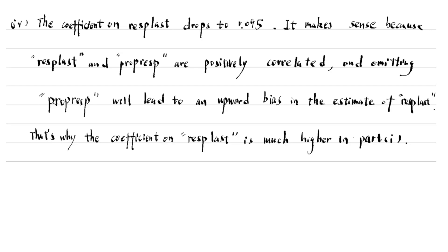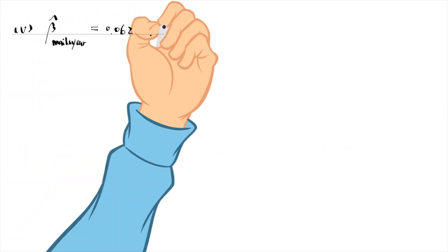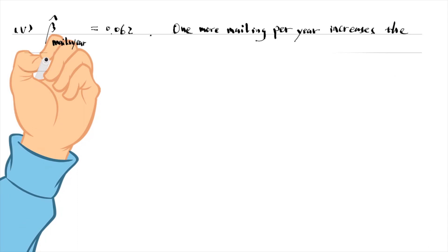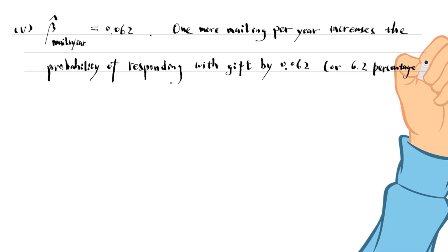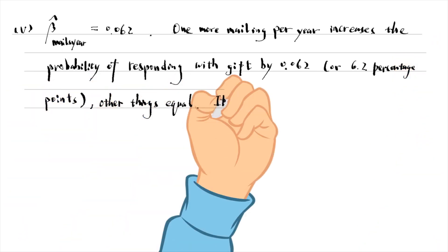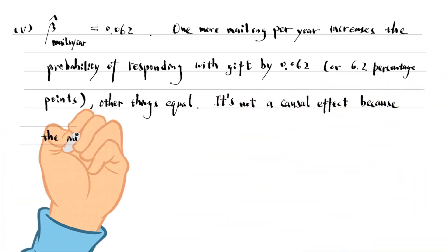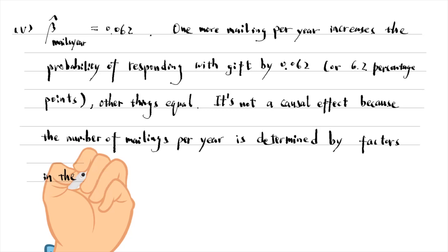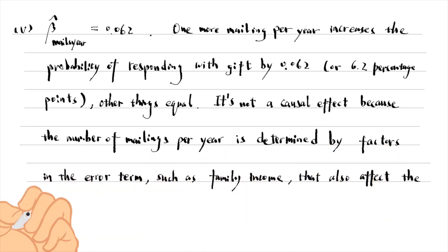In part 5, the coefficient on the variable mailsYear is 0.062. One more mailing per year increases the probability of responding with a gift by 0.062 or 6.2 percentage points, other things equal. It is not a causal effect because the number of mailings per year is determined by factors in the error term, such as family income, that also affect the outcome variable. The model suffers from omitted variable bias.